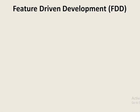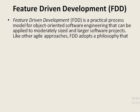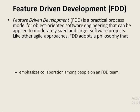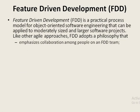As the name implies, the main point to note here is 'Feature.' This method is focusing on features of a software project. Feature Driven Development is a practical process model for object-oriented software engineering. This can be applied to moderately sized and larger software projects. FDD adopts a philosophy that emphasizes collaboration among people on an FDD team, meaning this project will be carried out by a team and there should be collaboration among the team members.